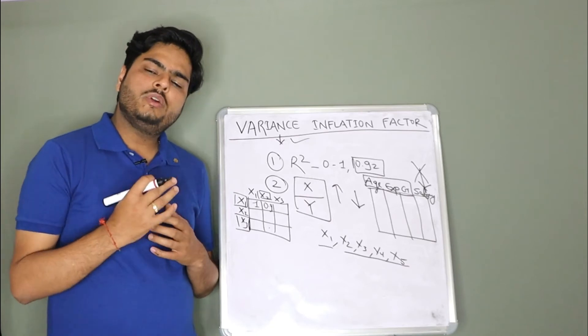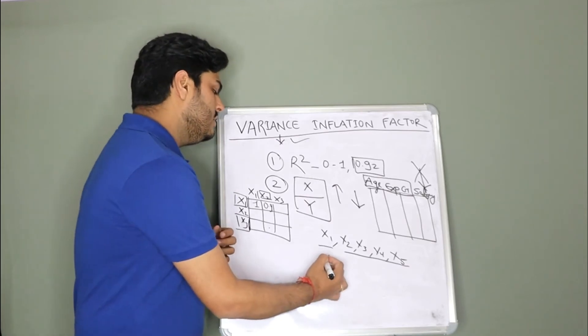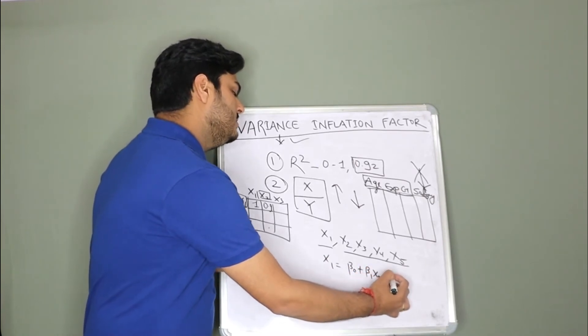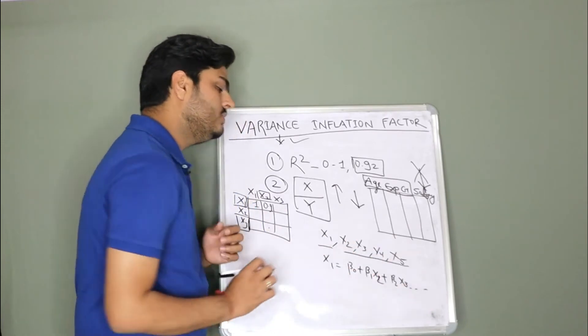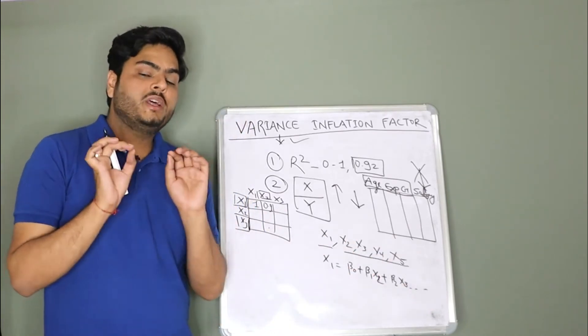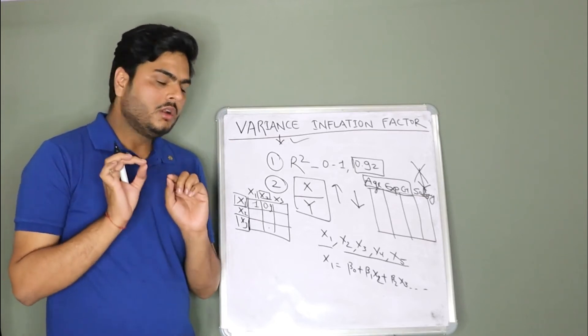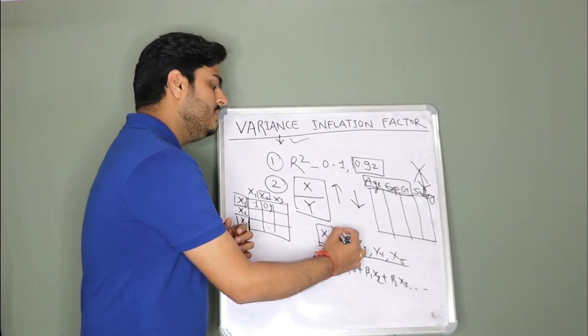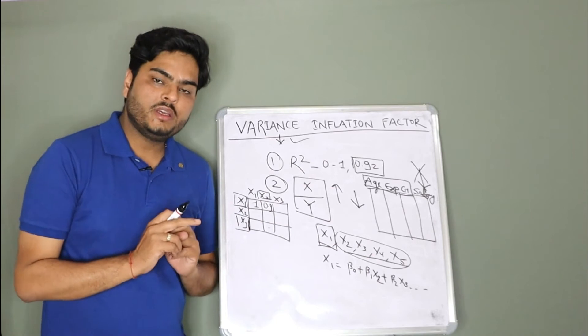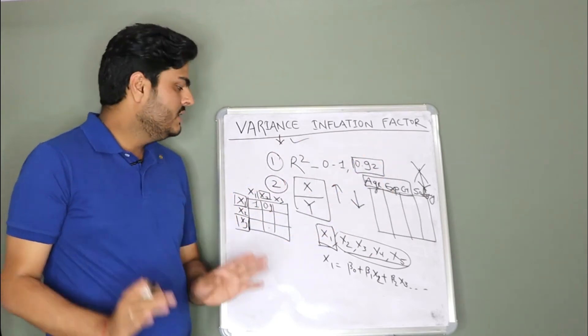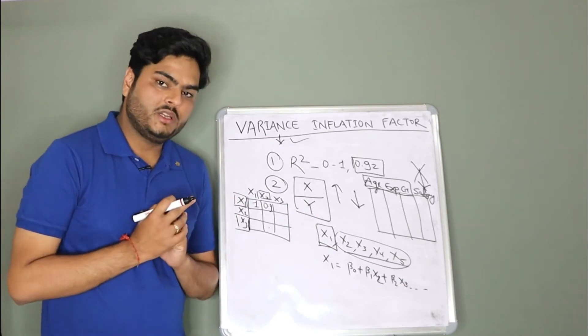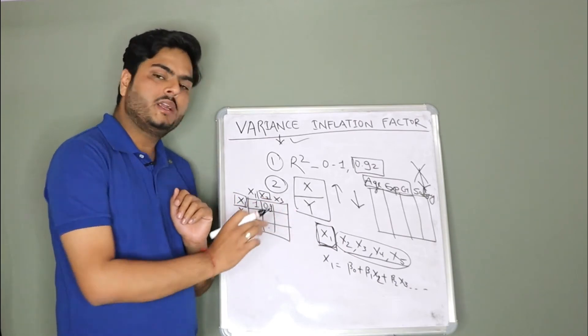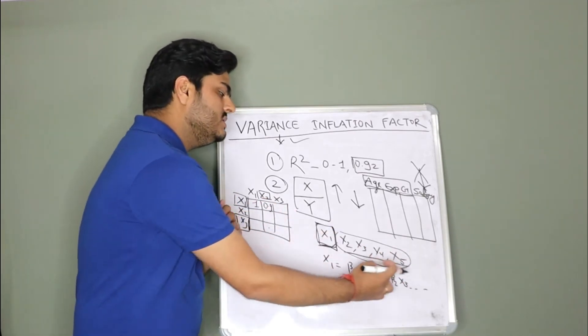So can we fit a regression model where it says x1 is equal to beta 0 plus beta 1 x2 plus beta 2 x3 and so on and so forth. What I am trying to do here? I am trying to fit a regression model on one independent variable and treating all other independent variables as features. I am repeating it again. Forget target variable for a moment. This is all your independent variable or features of the data.